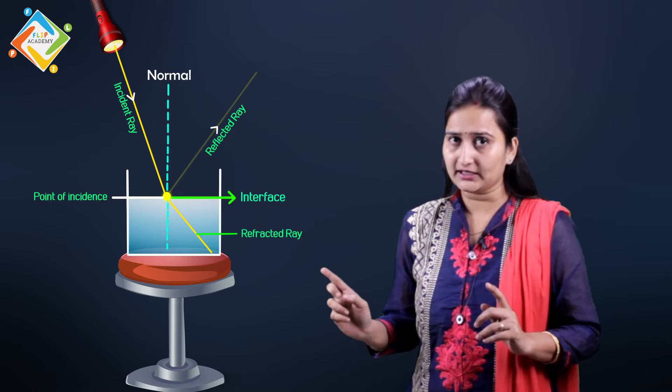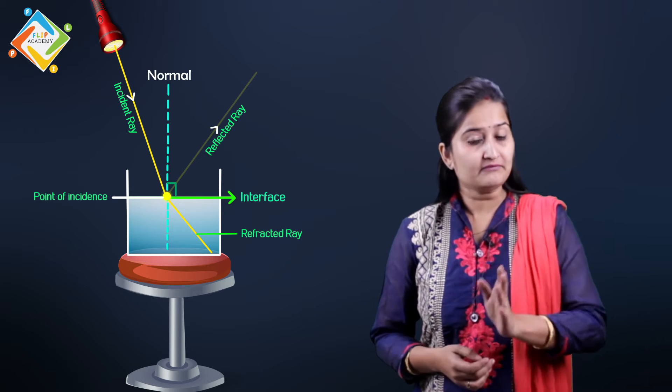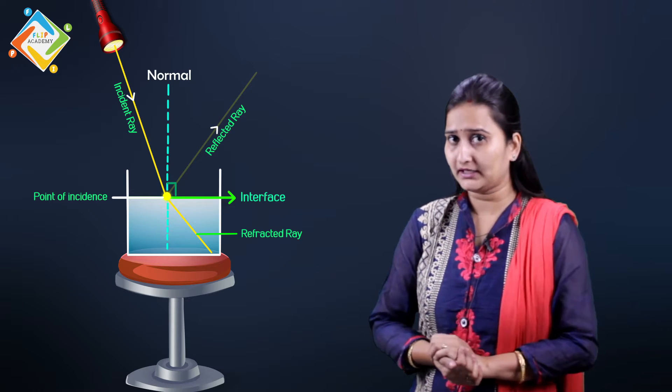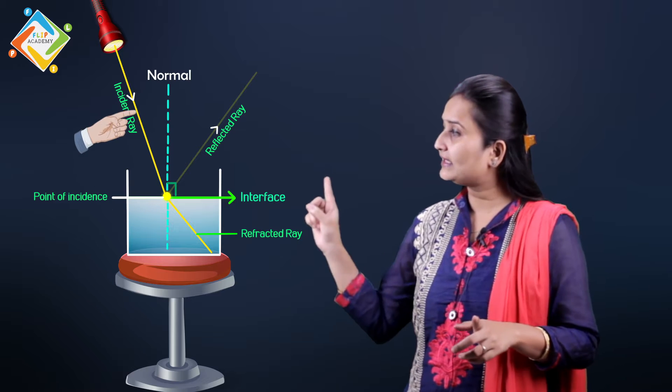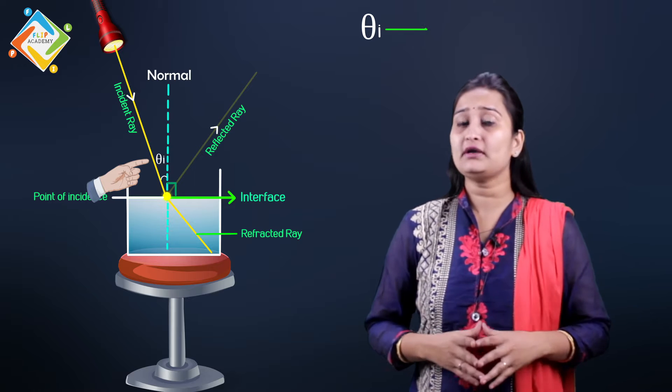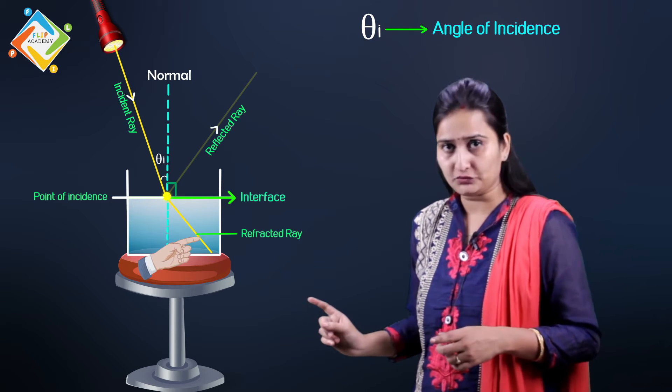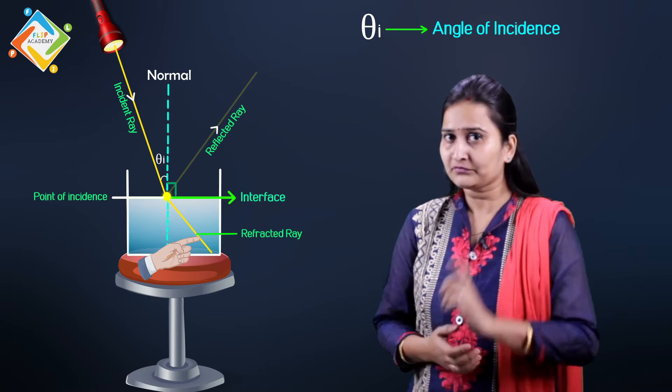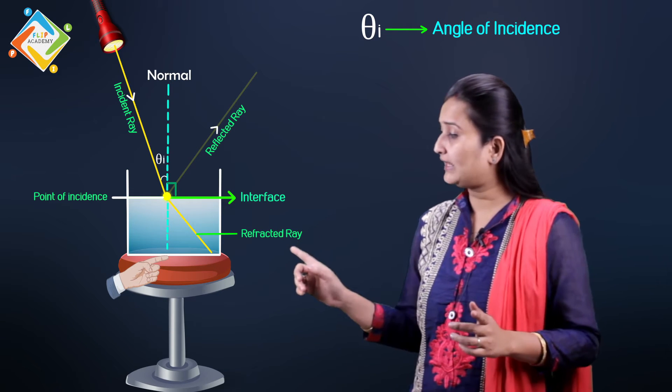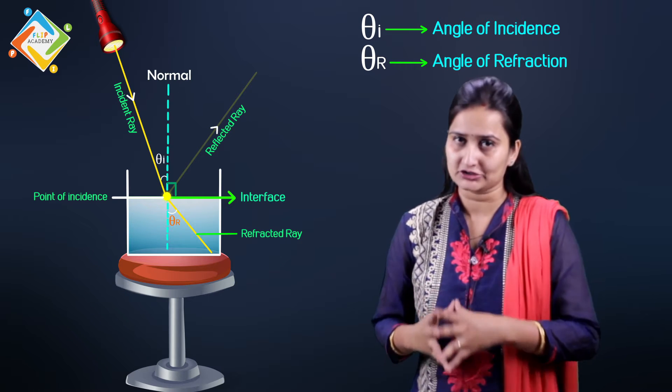Which is perpendicular to the interface. Now, same rule that you have to put in reflection. That means normal, the incident ray is represented by theta i. It is called as angle of incidence. Likewise, the ray that has penetrated in your water, that is your refracted ray. In that ray and the normal angle of normal, it is represented by theta r. And that is called as angle of refraction. So, this is the theoretical concept of how refraction happens.